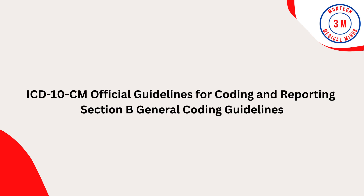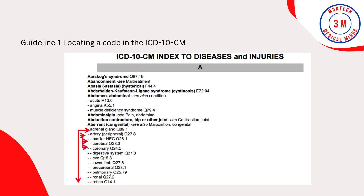ICD-10-CM Official Guidelines for Coding and Reporting, Section B, General Coding Guidelines, Guideline 1: Locating a Code in the ICD-10-CM. To select a code in the classification that corresponds to a diagnosis or reason for visit documented in a medical record, first locate the term in the alphabetic index and then verify the code in the tabular list. Read and be guided by instructional notations that appear in both the alphabetic index and the tabular list.